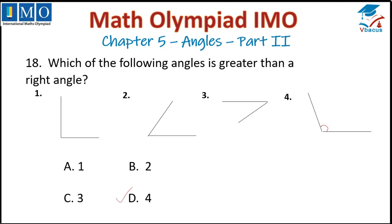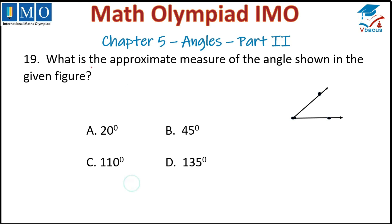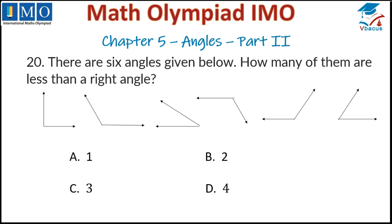Question number 19: What is the approximate measure of the angle shown in the given figure? The choices are 20°, 45°, 110°, or 135°. We know that 90 degrees looks like this, and the angle shown is approximately half of 90 degrees. Half of 90 is 45 degrees, so option B is correct.